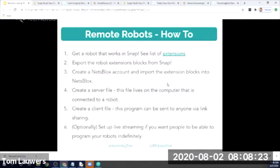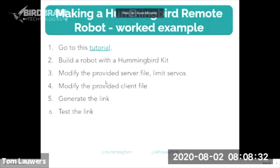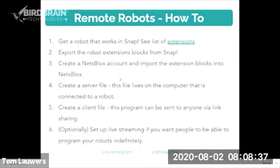Once you have the extension blocks in NetsBlocks, you need to create two files. The first is a server file, which lives on the computer connected to the robot. The way Snap typically works with hardware is that it connects to hardware via either a Bluetooth link, wireless link, or wired link — so you need a local laptop running this server file and communicating directly with the hardware. Then you need a client file, which is what I just opened for you to try controlling the smart house. The client file is what you send to your students; it communicates with the server file.